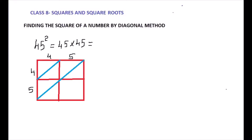So we are dividing the square into 4 parts, and each of those 4 parts is divided into two halves by a diagonal. Now consider 4×4: fours are 16, so write 1 on the top (above the diagonal) and 6 on the bottom (below the diagonal). Next, 4×5 = 20: write 2 above the diagonal and 0 below. Then 5×4 = 20: write 2 above the diagonal and 0 below.